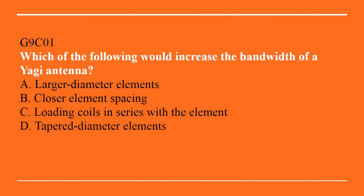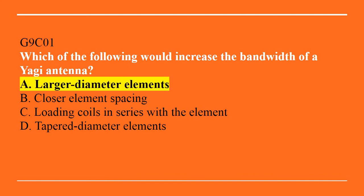G9C01: Which of the following would increase the bandwidth of a Yagi antenna? A. Larger diameter elements. B. Closer element spacing. C. Loading coils in series with the element. Or D. Tapered diameter elements. The answer is A, larger diameter elements.